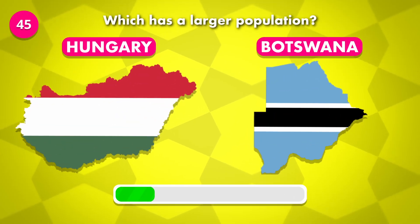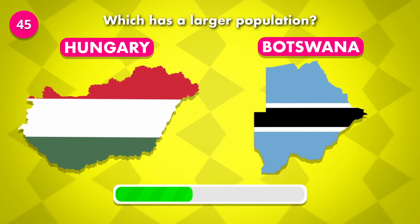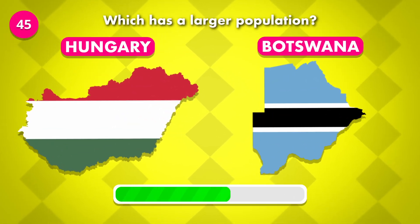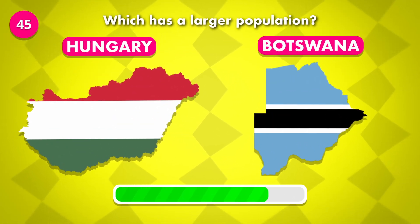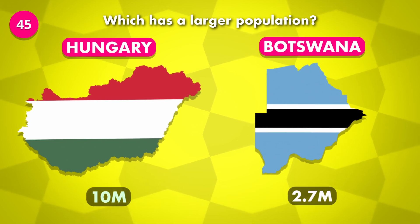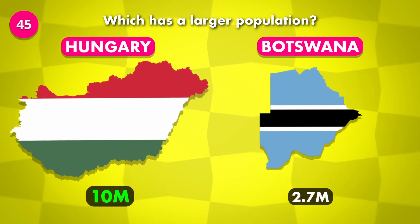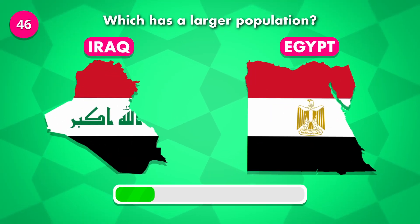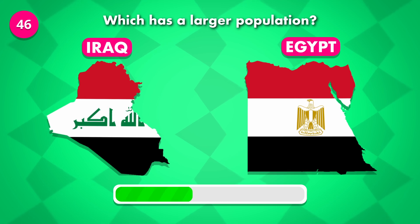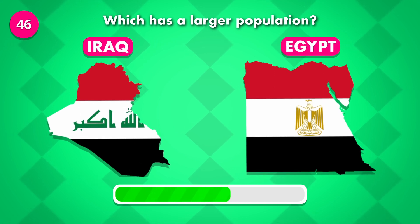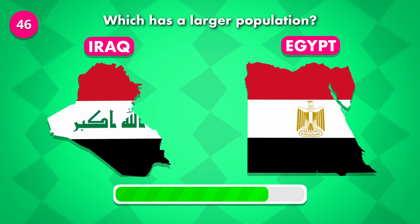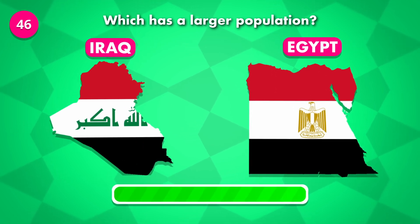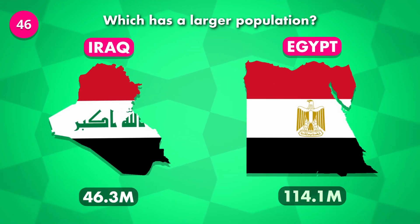Which country has the largest population? Guess the larger population — Iraq or Egypt? The solution is Egypt.